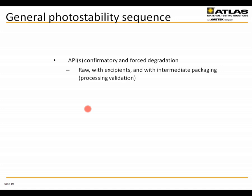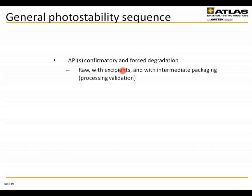There is a general sequence of photostability testing. First, we start with the API — the active pharmaceutical ingredient — doing both confirmatory and forced degradation testing. We test the APIs in several different forms: the raw API, the API mixed with the excipients, and also with any intermediate packaging for processing validation. Then for the final pharmaceutical product, we conduct confirmatory and forced degradation testing on the raw intermediate, in the final packaging, at both the initial pilot and batch scale batches.